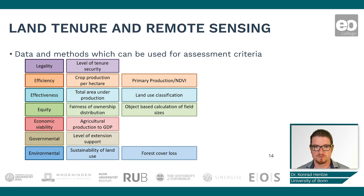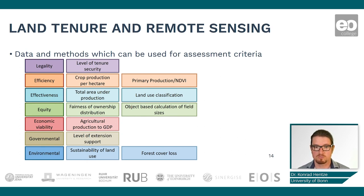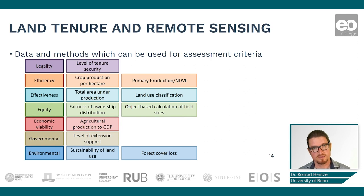Let's recap the four examples: first, crop production per hectare as an aspect of efficiency, mapped using primary production measures or the Normalized Difference Vegetation Index (NDVI); second, effectiveness — the total area under production — determined with a land use classification; third, equity — field sizes, irrigated vs. non-irrigated areas — assessed through object-based classifications and field size calculations; and fourth, environmental aspects, specifically conservation, where we look at forest cover loss. These are the four aspects we will tackle in the practicals.